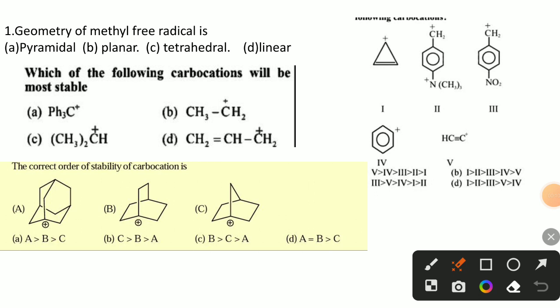The geometry of methyl free radical is planar. Which of the following carbocations will be more stable? Option A is triphenyl methyl carbocation, option B is ethyl carbocation, option C is isopropyl carbocation, and option D is allyl carbocation.